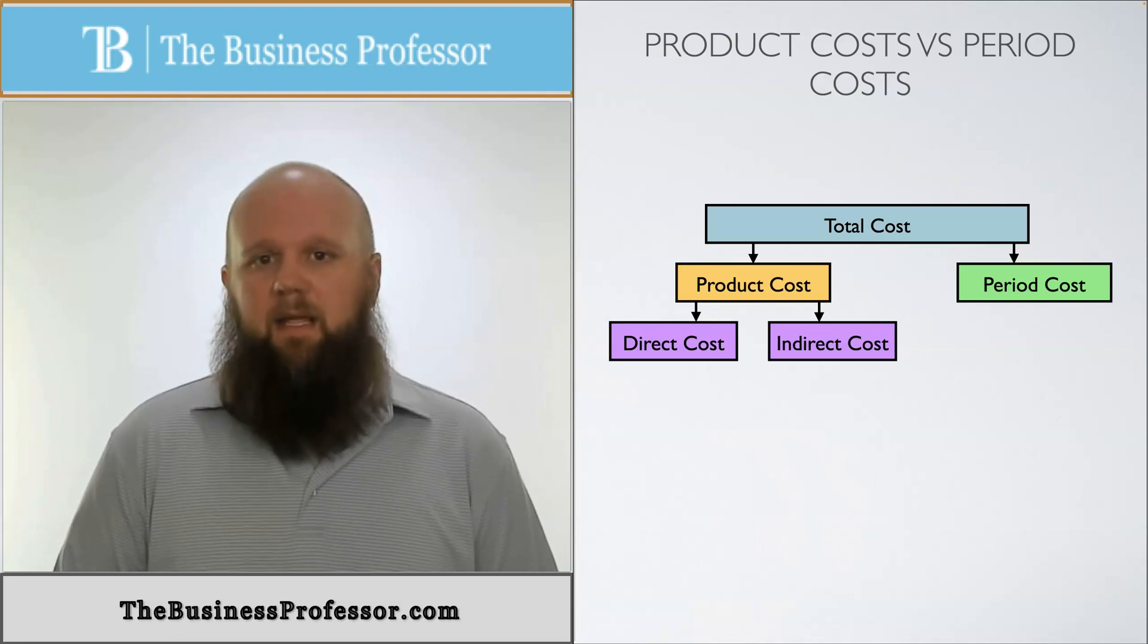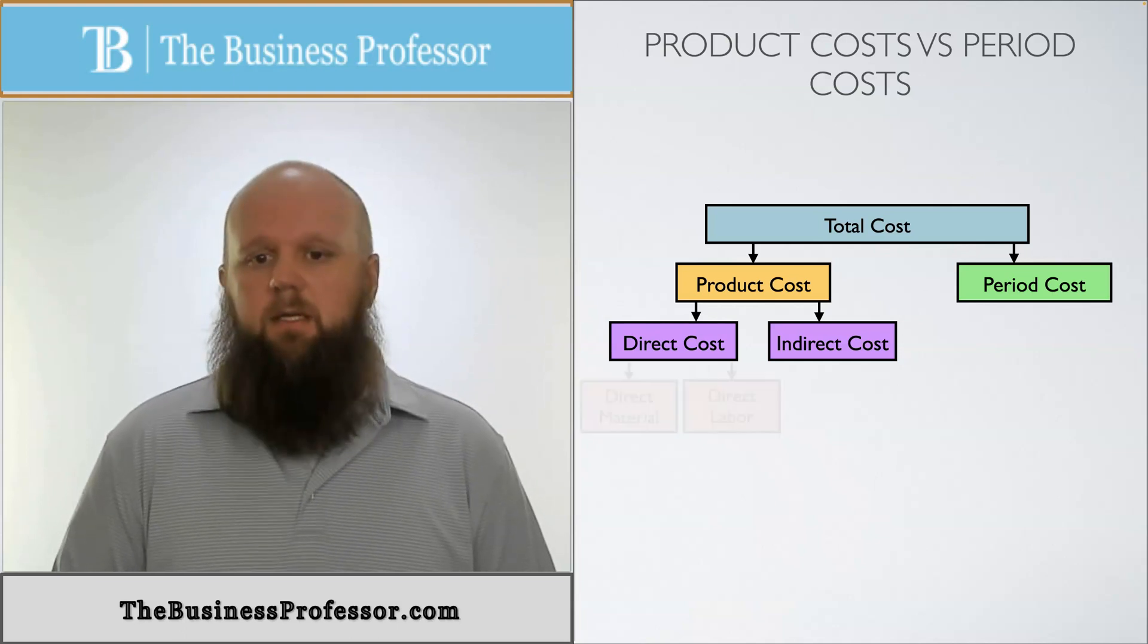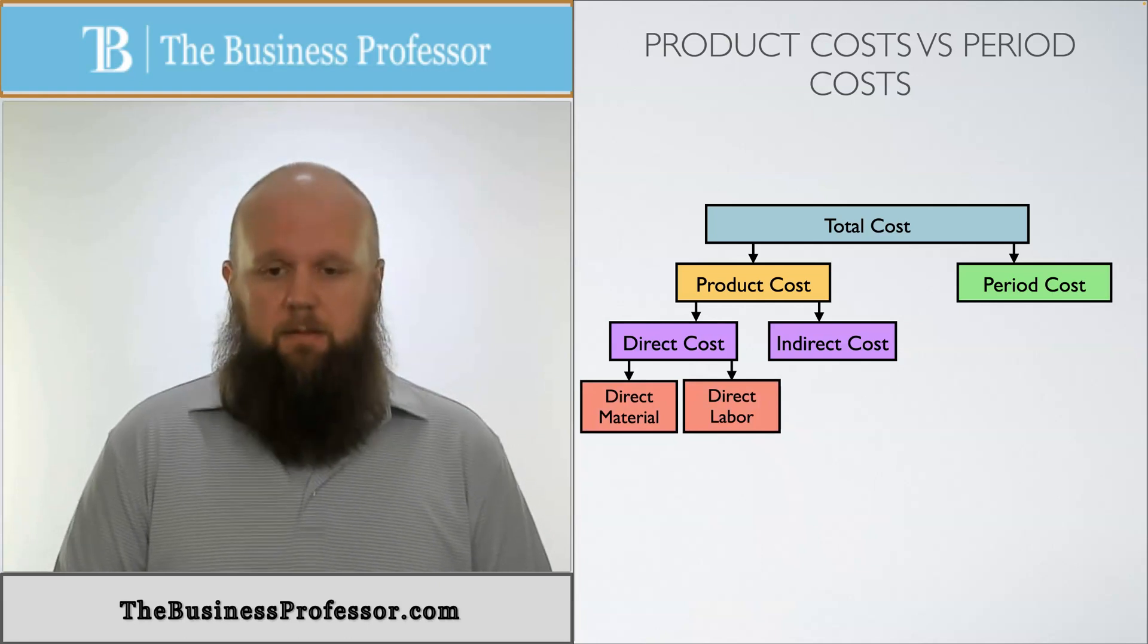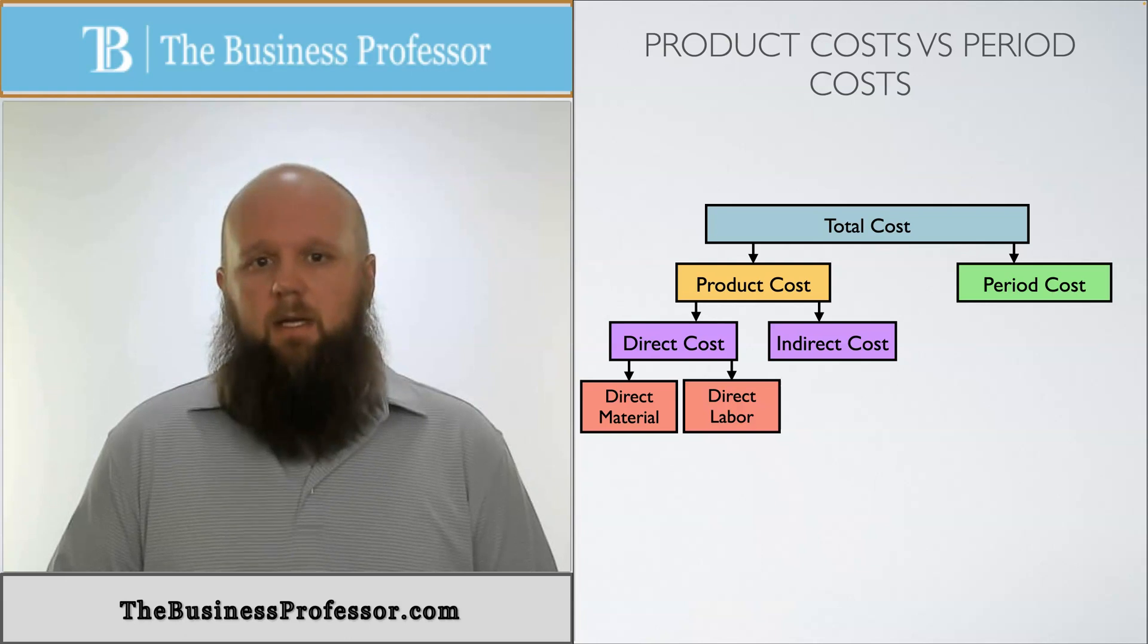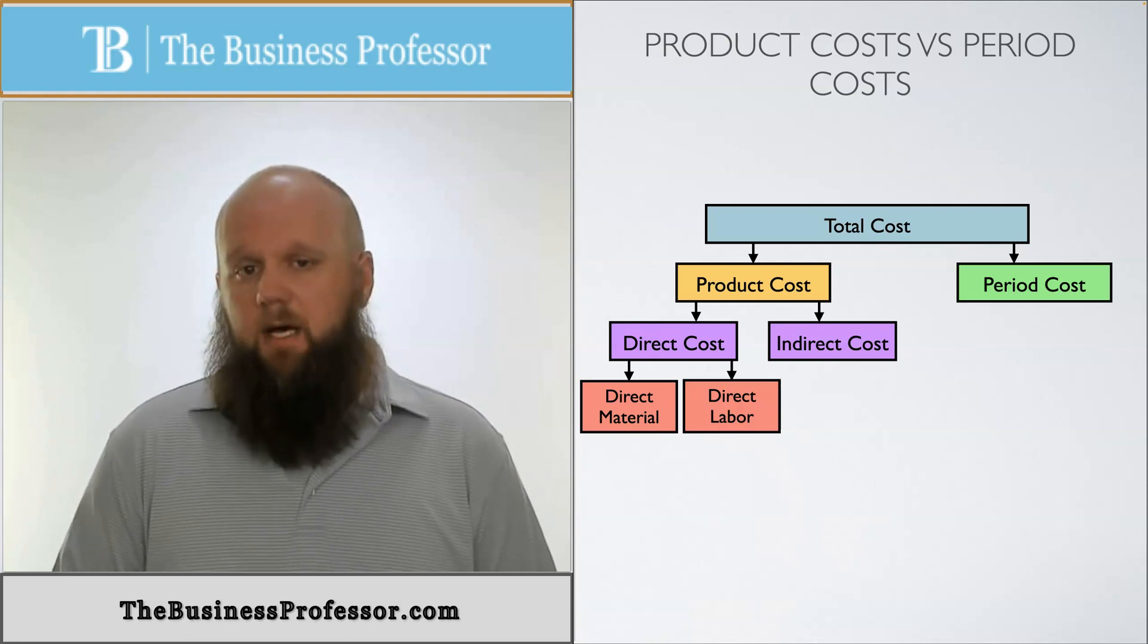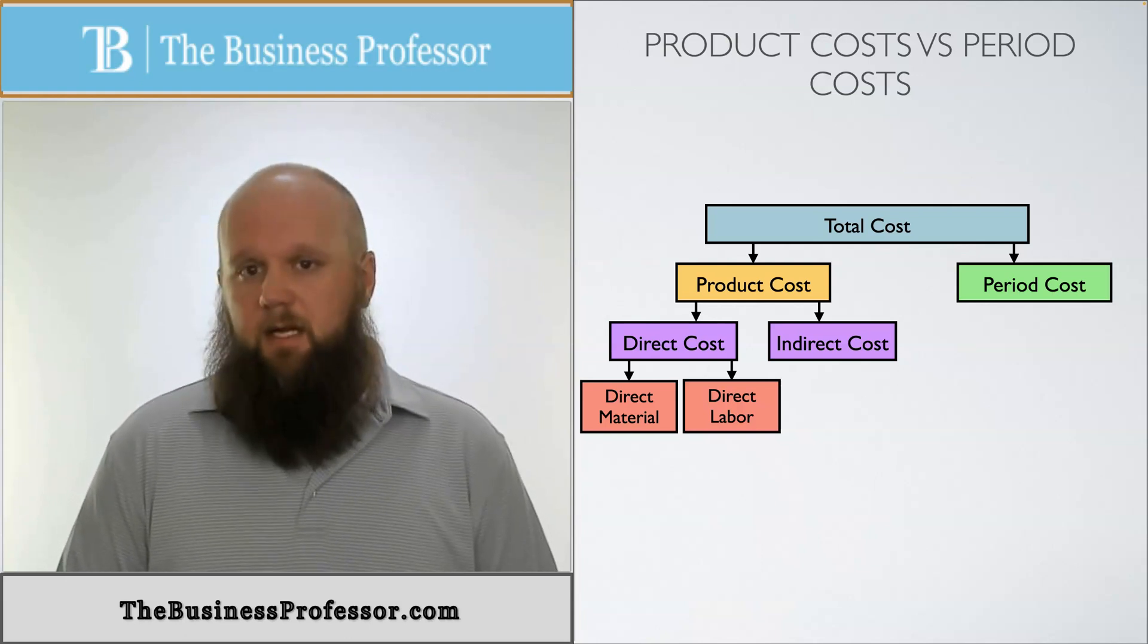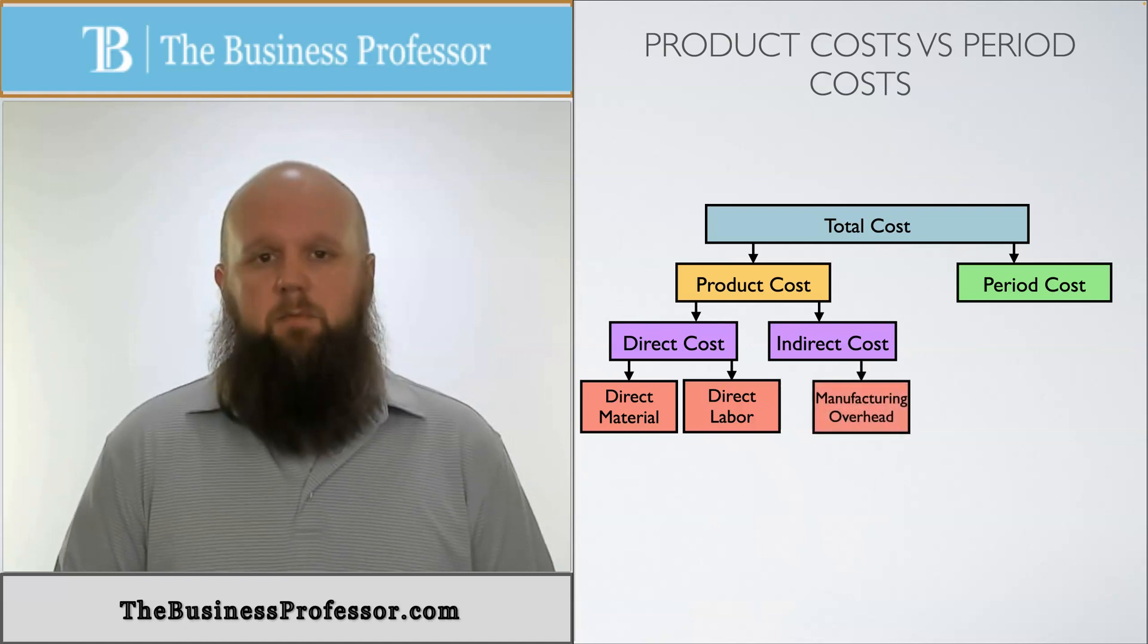Now direct costs, we can break that down into three categories. Well, two categories, excuse me. We can break that down into direct material and direct labor. The indirect cost, as we mentioned in this video, is the catch-all. If it's a product cost and it's not direct material and it's not direct labor, then by default it's going to fall into manufacturing overhead.